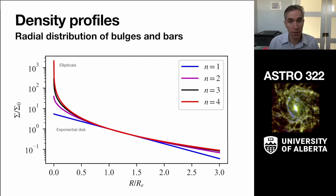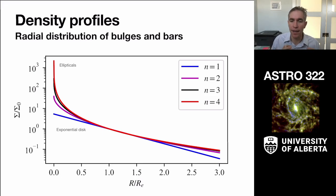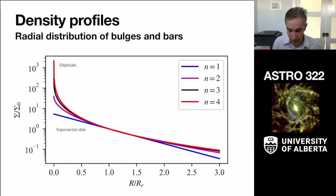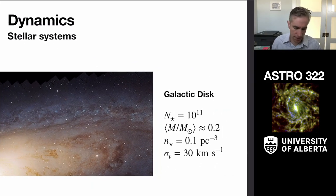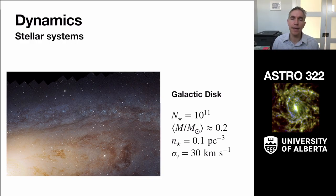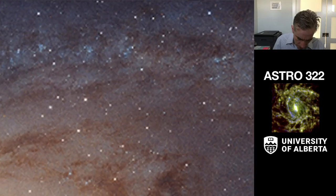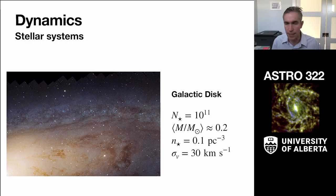We've talked about the mathematical description of what we see, and now we have to think about the physics of these individual components. This is what a galaxy looks like — this is the Andromeda galaxy, filled with enormous numbers of stars. The bright individual sources you can clearly see are foreground stars in our own galaxy; all the faint ones are the actual stars in the distant galaxy.